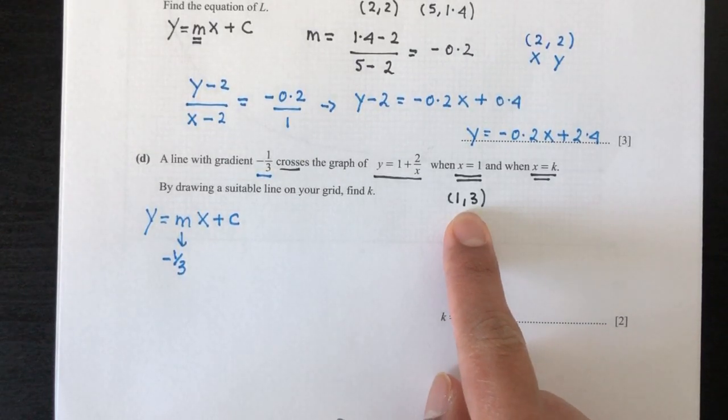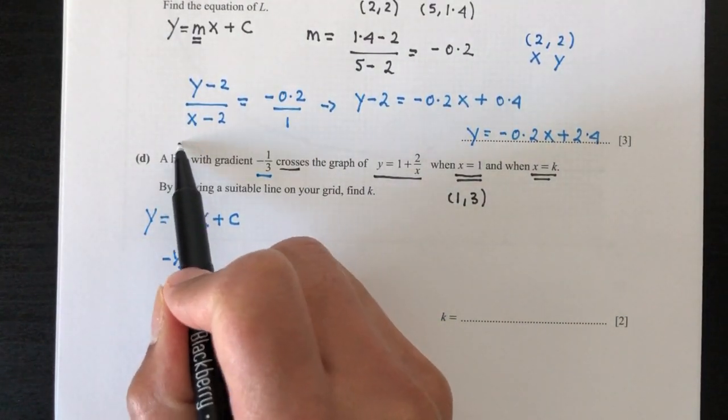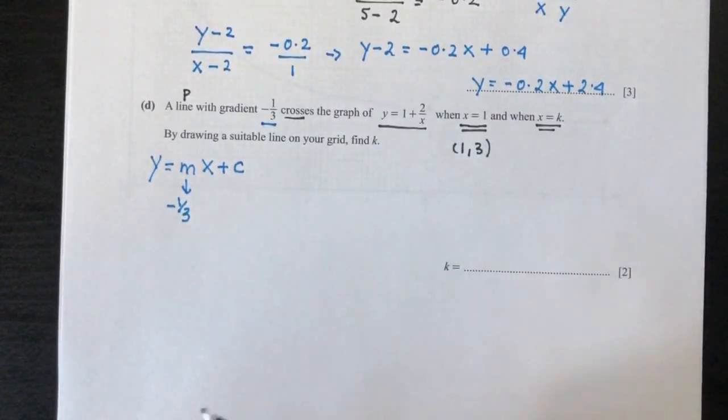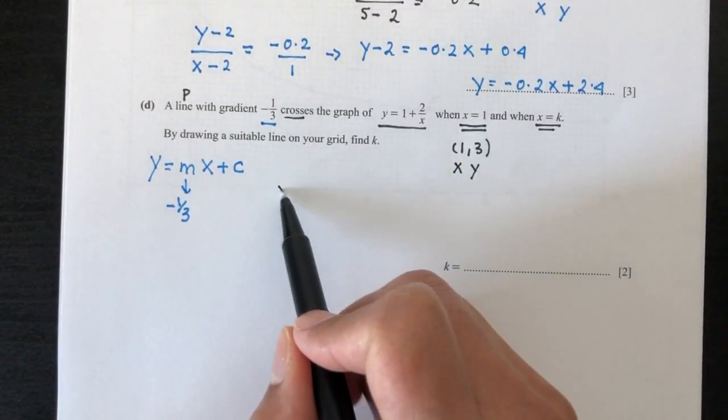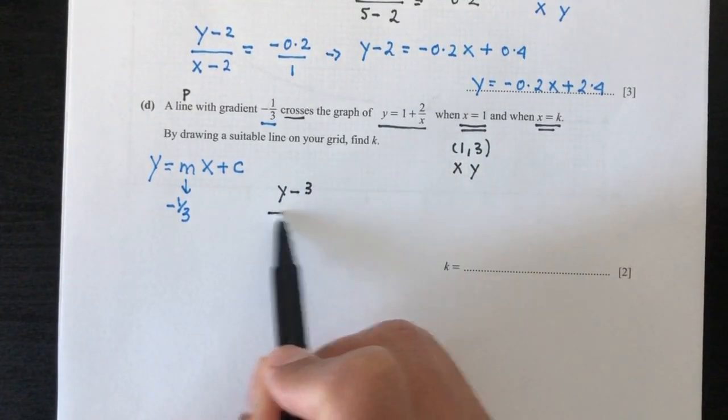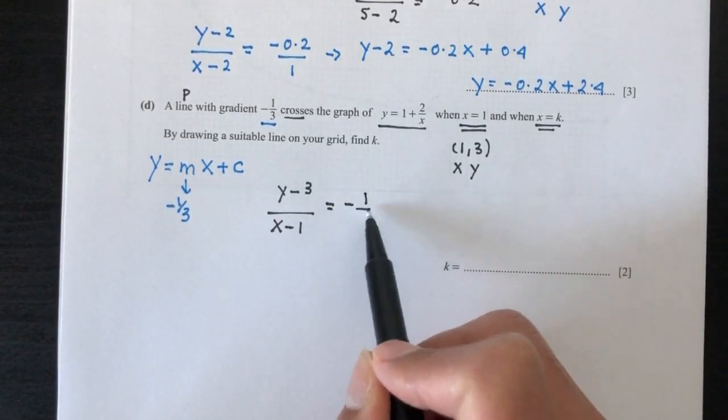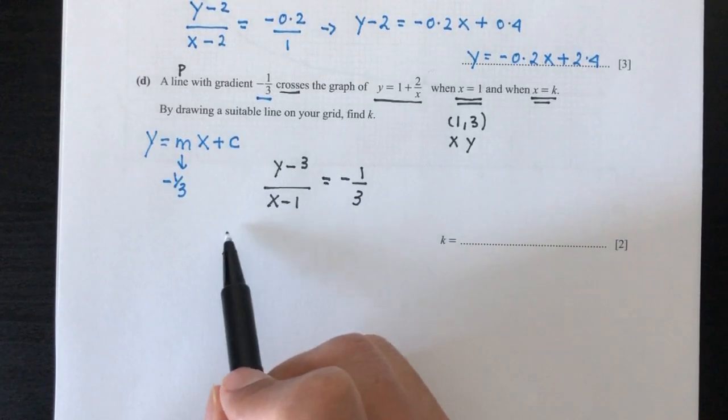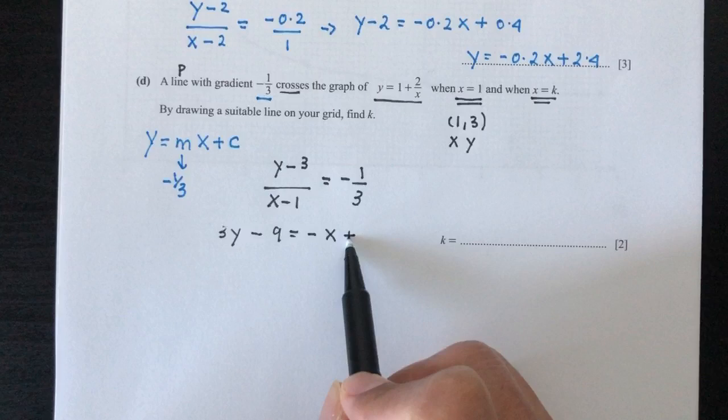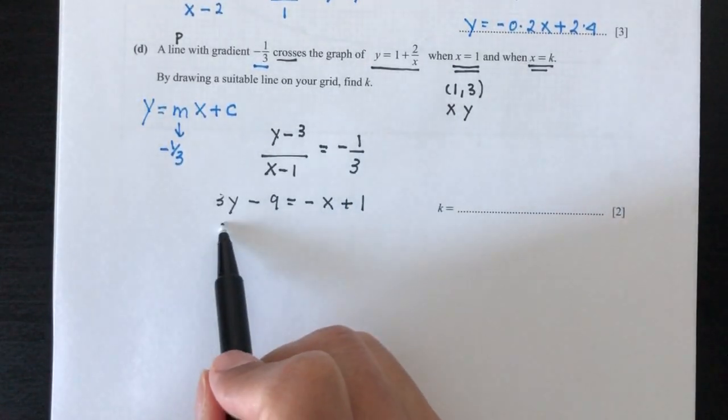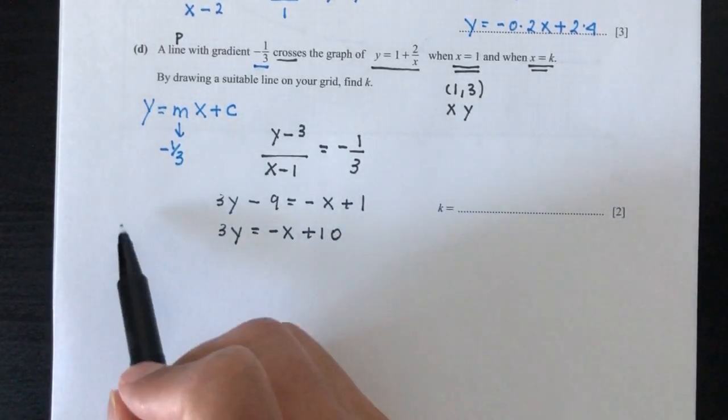Now since you know a passing point and the gradient, you can find the equation of this line. Let's call this line P. So how would you find the equation of line P? You will do the same steps. This is your x coordinate, this is your y coordinate. You will do (y - 3) / (x - 1) = -1/3. So now we have to cross multiply. You will have 3y - 9 = -x + 1. Now simplify: 3y = -x + 10. That is your equation of your line P.